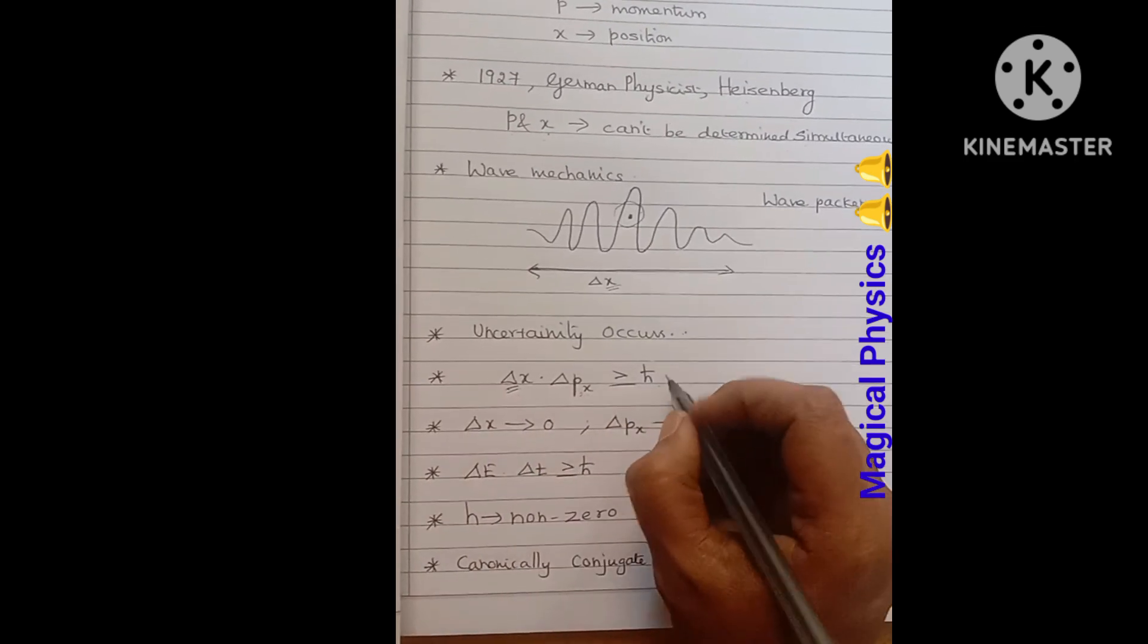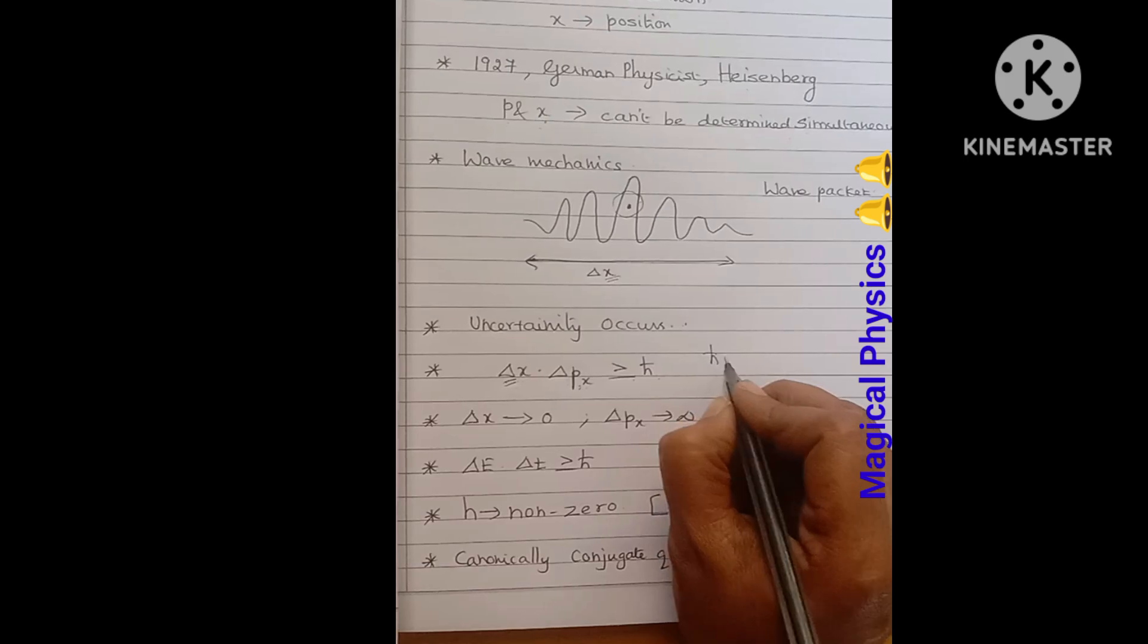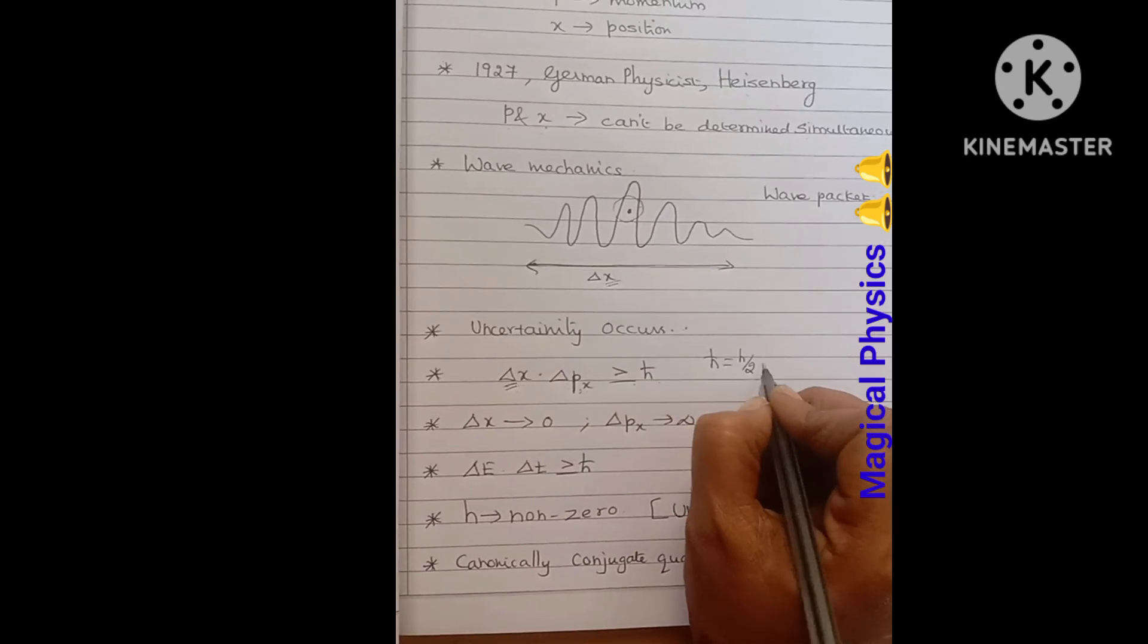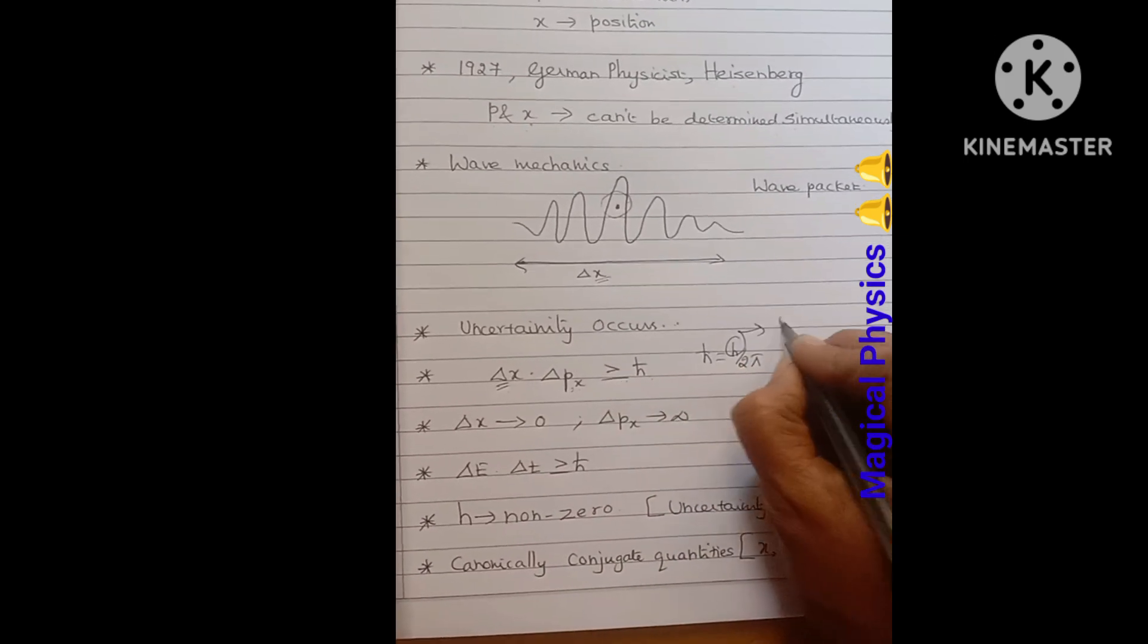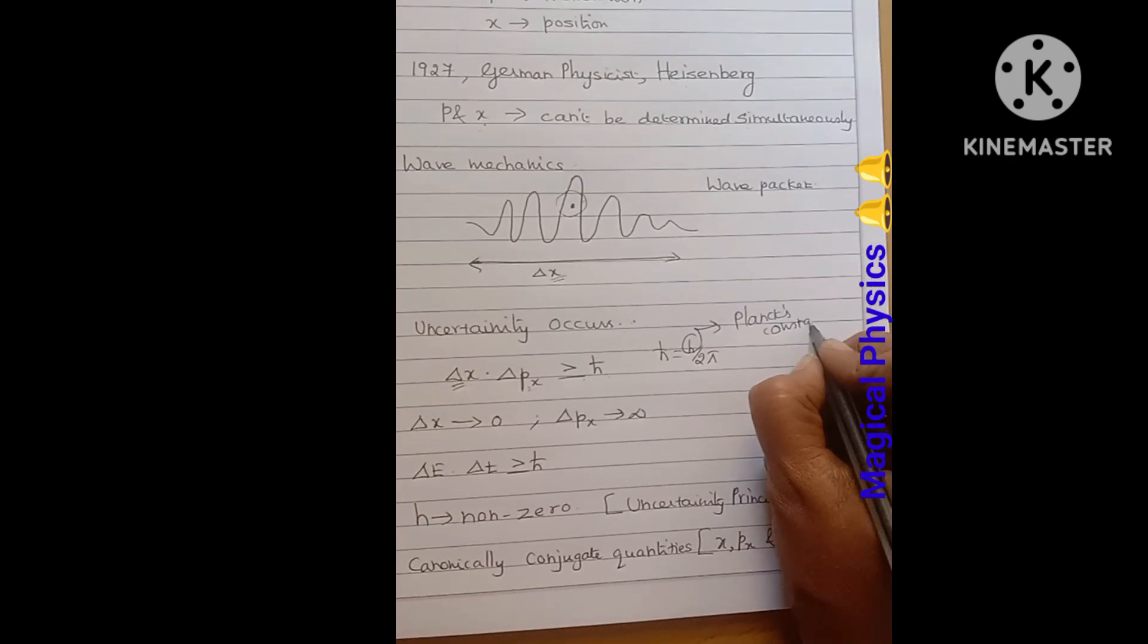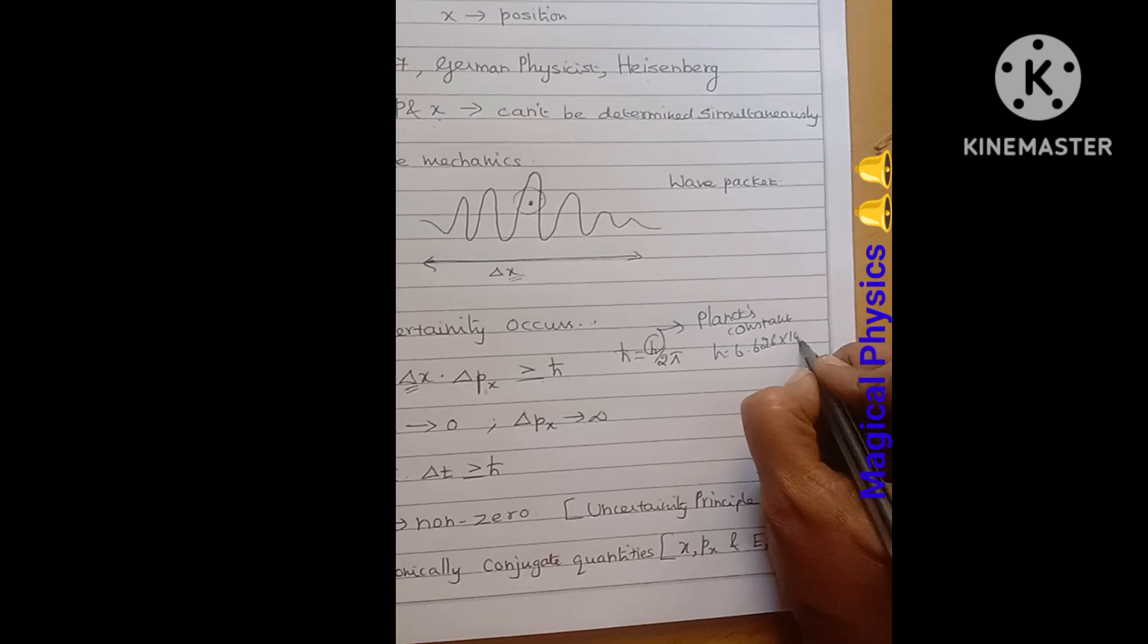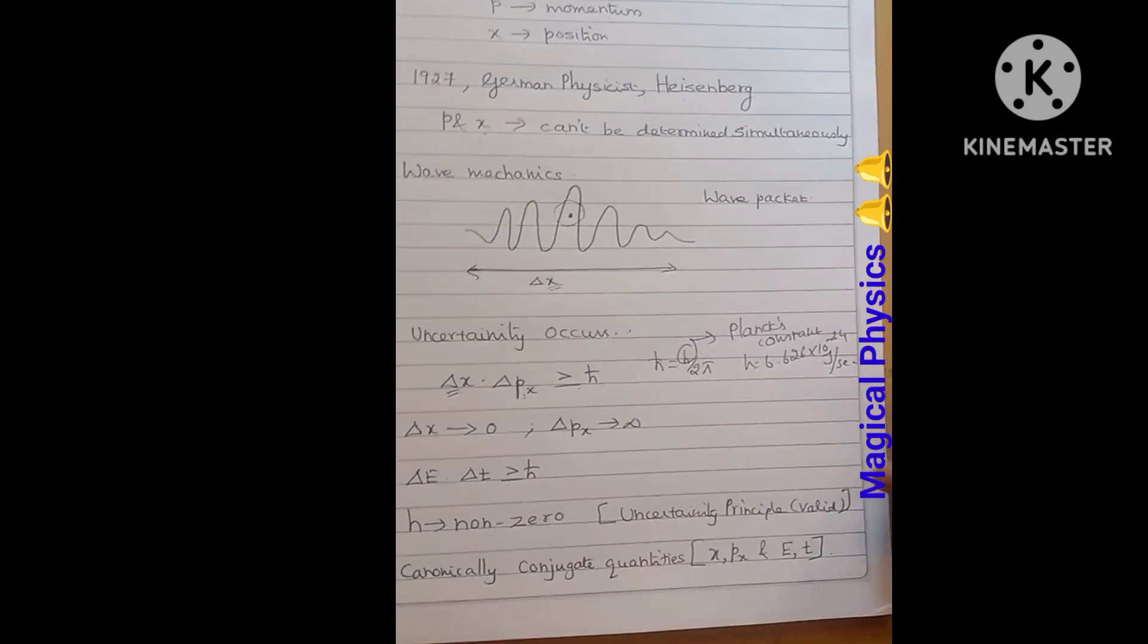The product between these two terms will be greater than or equal to h-cross. We know that h-cross equals h by 2π. This h is the Planck's constant. h equals 6.626 × 10^-34 joule per second.